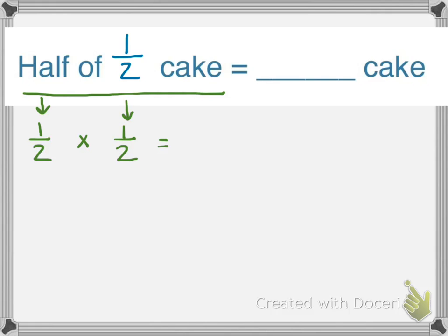Now we're going to multiply one half times one half. We know from our previous lessons, when we multiply, we multiply across. So 1 times 1 is 1, and 2 times 2 is 4. So half of a half a cake equals one fourth of cake.